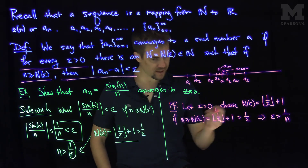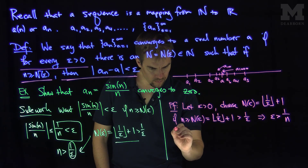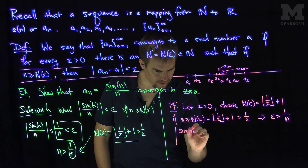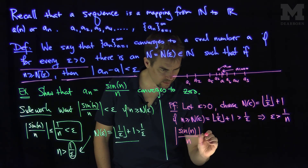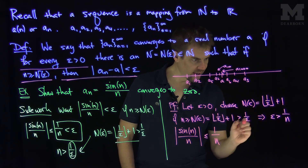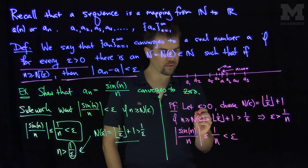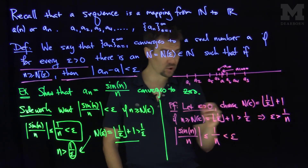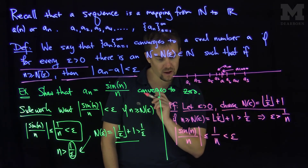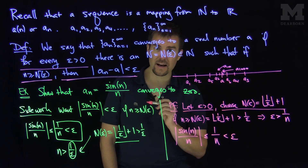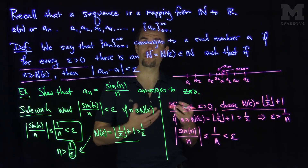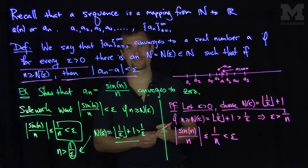So now we can see: the absolute value of sine of n over n, by our same inequality, is less than or equal to one over n, and one over n is less than epsilon. So we've shown that for any epsilon given to us, we can choose an N(epsilon) so that the absolute value of sine of n over n is less than epsilon, provided that little n is bigger than N(epsilon). And that is the structure of the proof of convergence. Thank you very much.